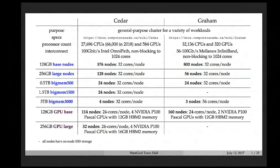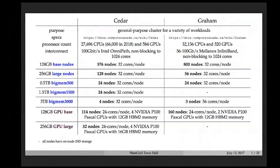Cedar and Graham both have close to 30,000 cores, and most of these are on 120-gigabyte shared memory base nodes. We also have a fair number of fat or large-memory nodes for running codes that require a lot of memory — for example, bioinformatics codes that require access to large shared memory space.